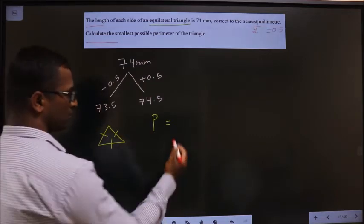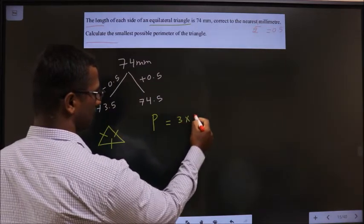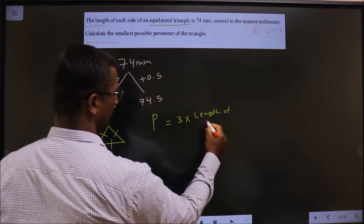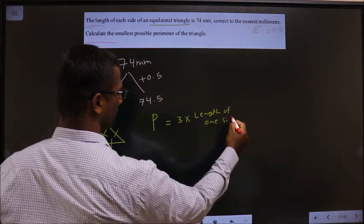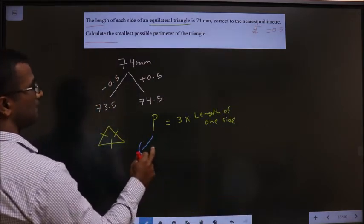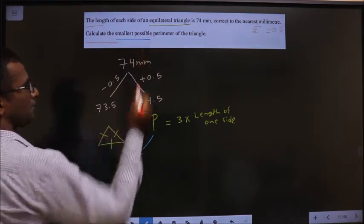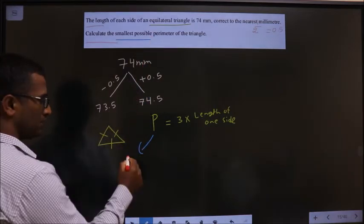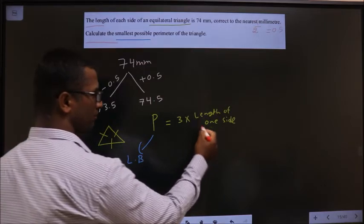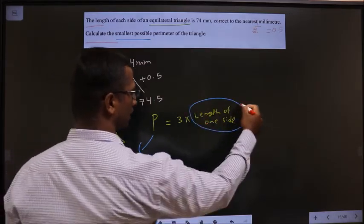So to get the perimeter you should do 3 times the length of one side. So here for perimeter you should get smallest possible means lower bound. So here lower bound means for the length also you should take the lower bound.